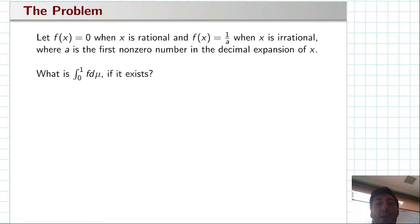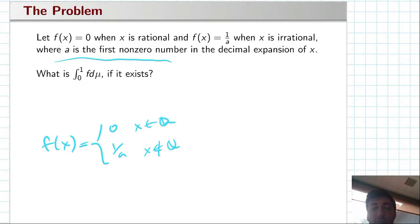We're going to be working with the following problem in real analysis. Let f of x be zero when x is rational, so f of x is zero when x is in the rational numbers, and it's some number one over a when x is irrational on the unit interval.